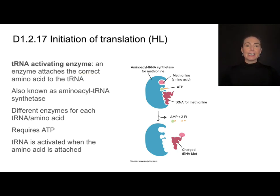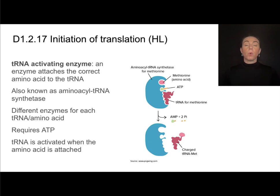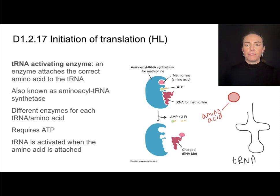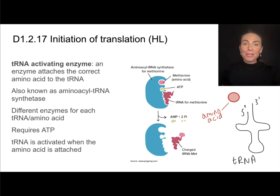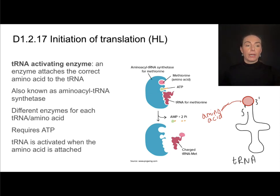There is a different tRNA activating enzyme for each amino acid. Here is the one specific to methionine. When the tRNA activating enzyme attaches an amino acid to the tRNA, this requires ATP. tRNA, like all RNA molecules, is single-stranded — it's looped in on itself, but it's still one strand. Just like any nucleotide, it has a 5' end and a 3' end, and just like nucleotides, amino acids can only attach to the 3' end.